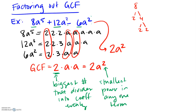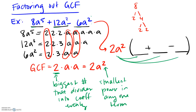I'll write my answer structure first: since we had something plus something minus something, we'll have the same shape after factoring — something plus something minus something. We need the same signs and the same number of terms as we started with. To find what goes inside the parentheses, think about distribution: 2a squared times what equals 8a to the fifth? I need a 4, and I need a to the third. Alternatively, you can just divide each term by 2a squared.